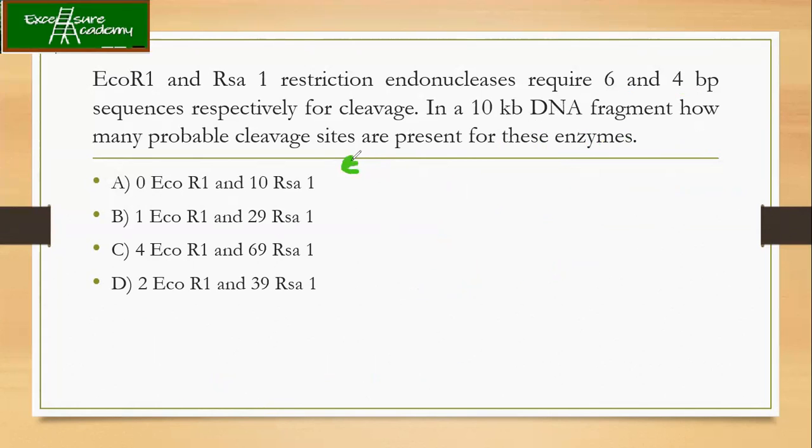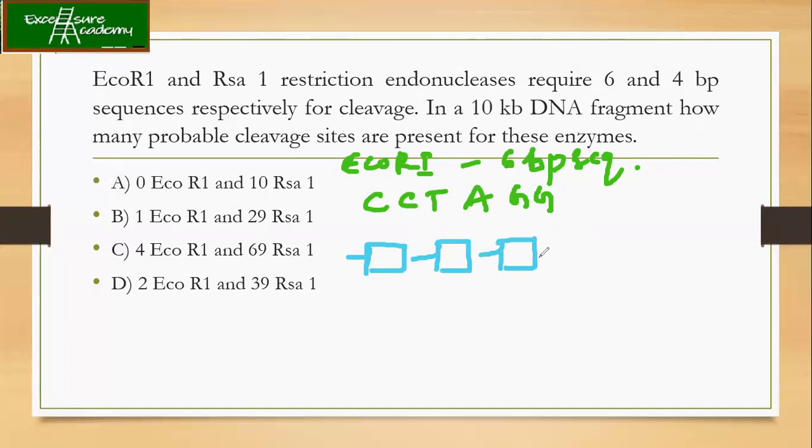Let's talk about EcoR1. We know that it has six base pair sequences. It's okay even if you don't remember the sequences: C, C, T, A, G, G. Now as I was saying, it needs around six base pairs. What is the probability? Let us say that these are the sequences: C, C, T, A, G, and G.